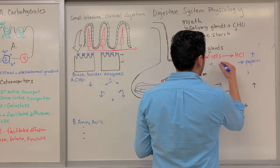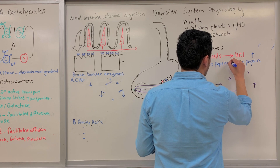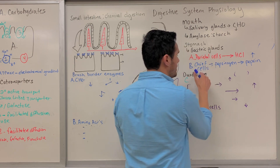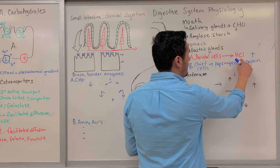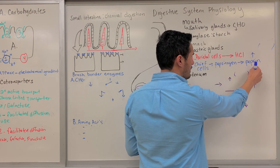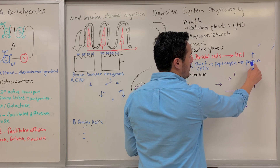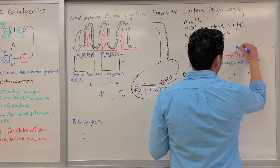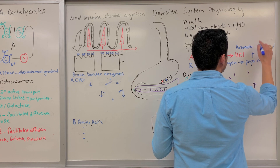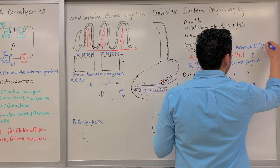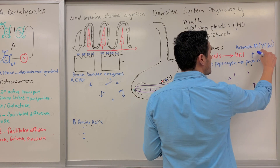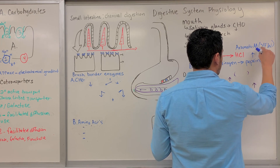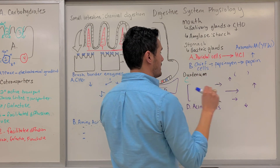One of the enzymes that's going to degrade some of these peptides or proteins is what's known as pepsin. Pepsin is derived from pepsinogen, and pepsinogen is what's released by the chief cells. The chief cells release pepsinogen, and then hydrochloric acid converts pepsinogen into pepsin. Once we have the active pepsin, this is what will cleave specific sites on that protein. The target sites are the aromatic amino acids — YFW: tyrosine, phenylalanine, and tryptophan. So we're cleaving at those specific peptide bond sites.